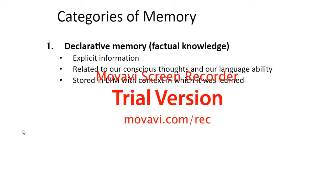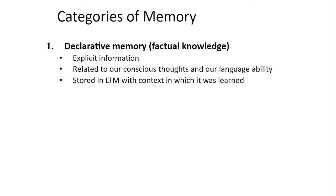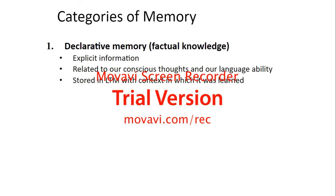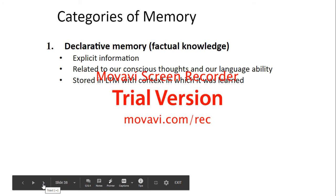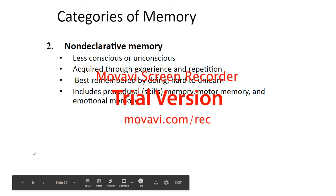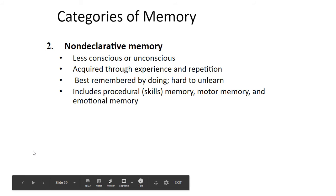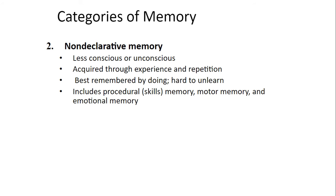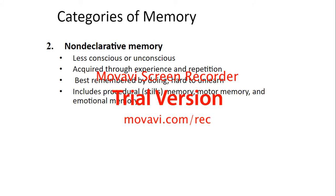Categories of memory: you have declarative memory, which is factual knowledge — explicit information related to our conscious thoughts and language ability, stored in long-term memory with the context in which it was learned. Then you have non-declarative memory, which is less conscious or unconscious, acquired through experience and repetition, best remembered by doing, and hard to unlearn. It includes procedural memory, motor memory, and emotional memory.